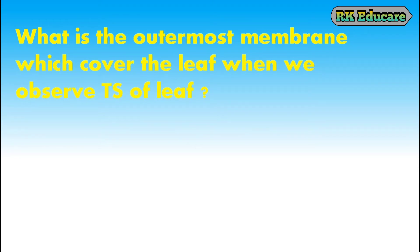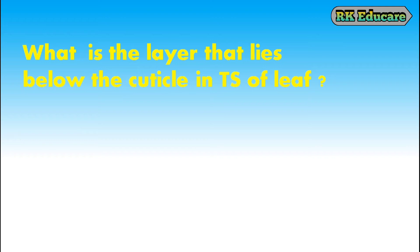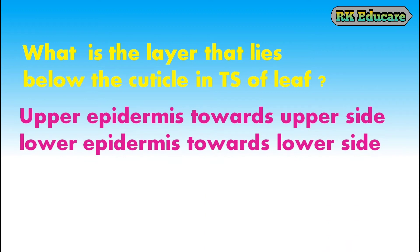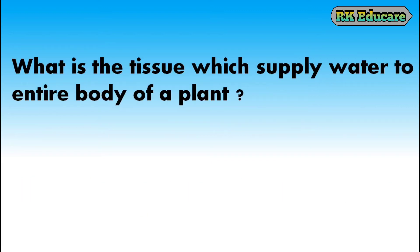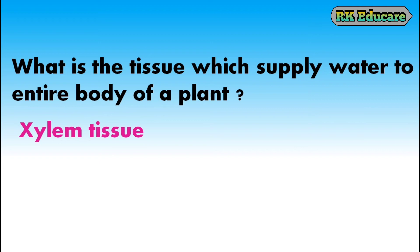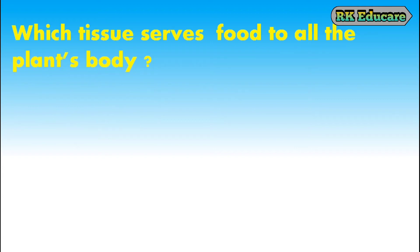What is the outermost membrane which covers the leaf when we observe the transverse section of a leaf? Cuticle is the outermost membrane which covers the leaf. What is the layer that lies below the cuticle? Upper epidermis towards the upper side and lower epidermis towards the lower side are the layers below the cuticle. Where does photosynthesis take place? Photosynthesis takes place in the chloroplast of the plant cell. Which tissue serves food to all the plant's body? Phloem tissue serves food to all the organs of the plant's body.